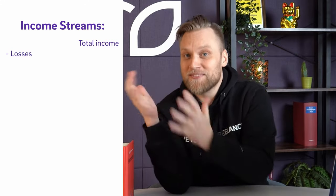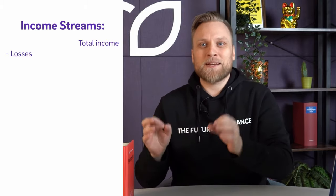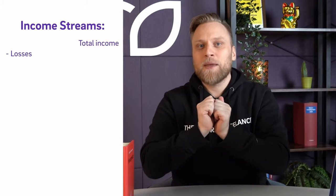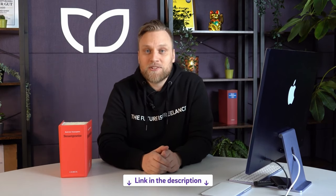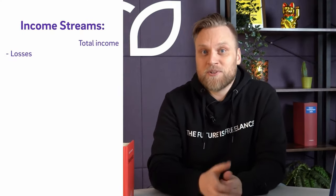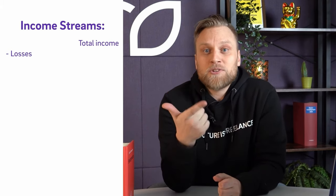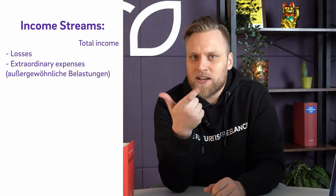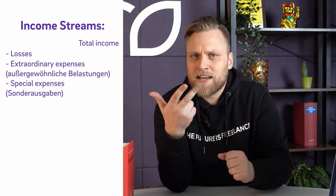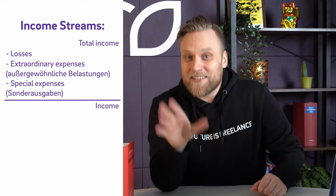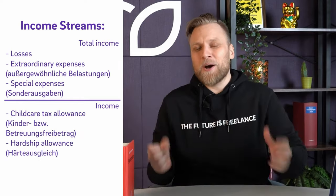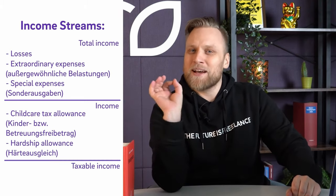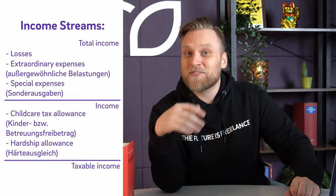From the total income, we deduct losses from other years — previous or following years — because you can offset losses not only in the same year but also across years. We can also deduct exceptional burdens, for example healthcare costs, and special expenses such as health insurance and pension insurance. When we deduct all of these, we have income. From income, you can deduct the child allowance or child care allowance, and possibly a hardship compensation. Once completed, we ultimately have your taxable income, which serves as the foundation for calculating income tax.